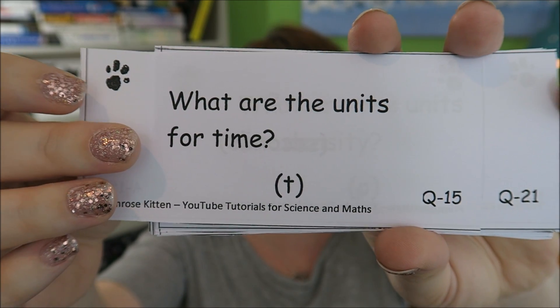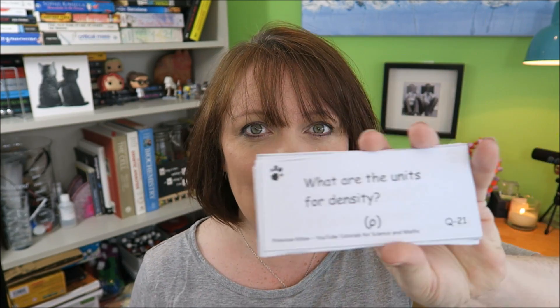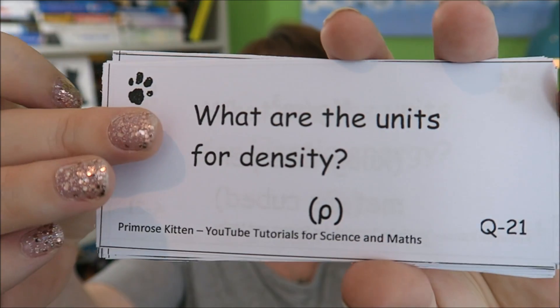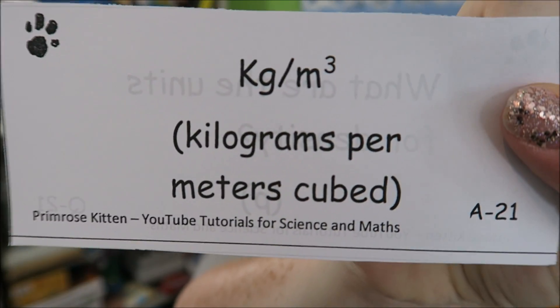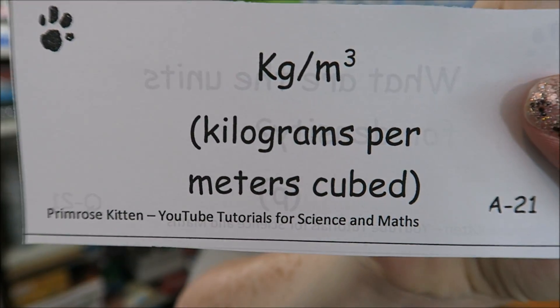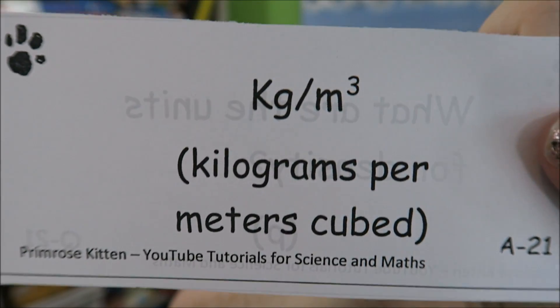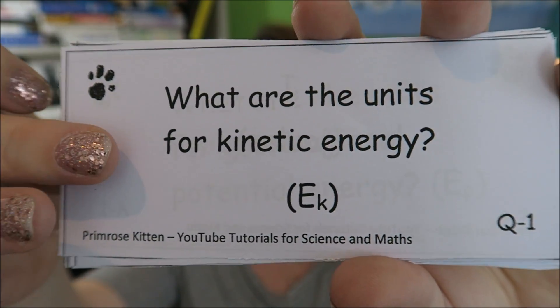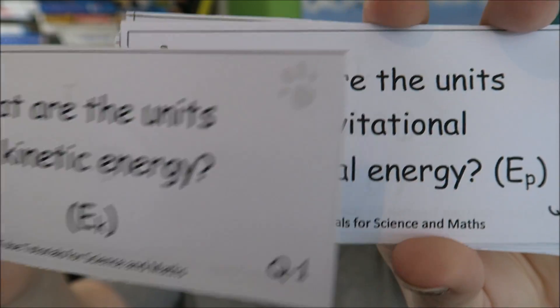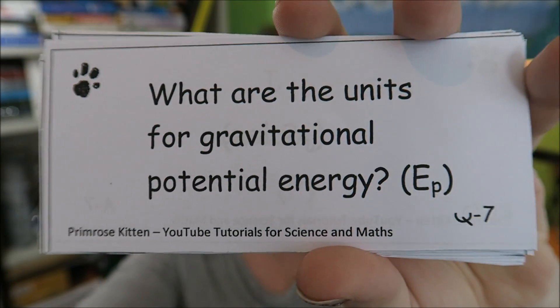Time is measured in seconds. You need to be able to confidently convert between days, hours, minutes, seconds, and back again. What are the units for density? Density is measured in kilograms per meters cubed. What are the units for kinetic energy? Kinetic energy, like all energy, is measured in joules.